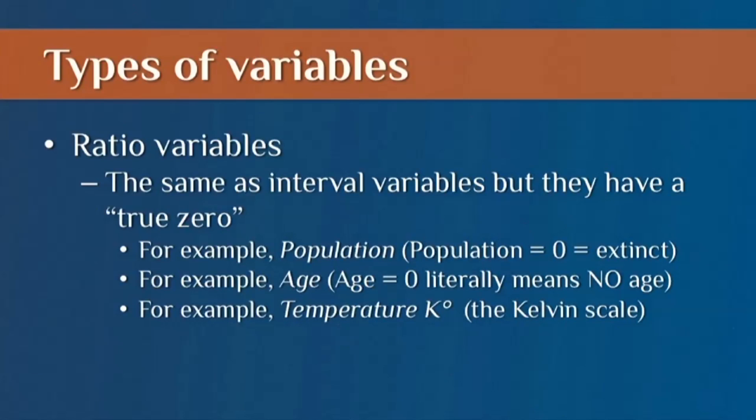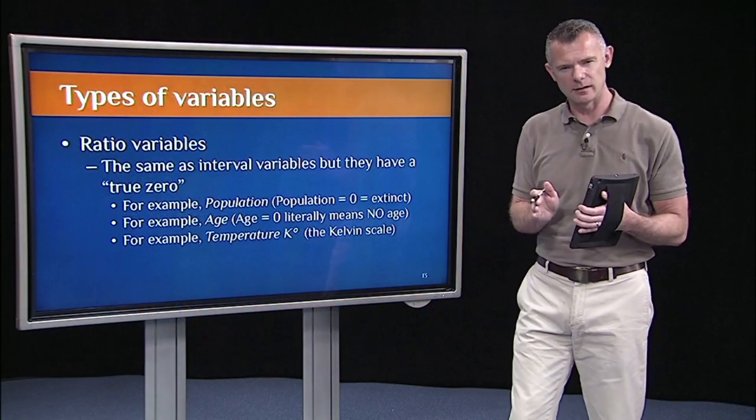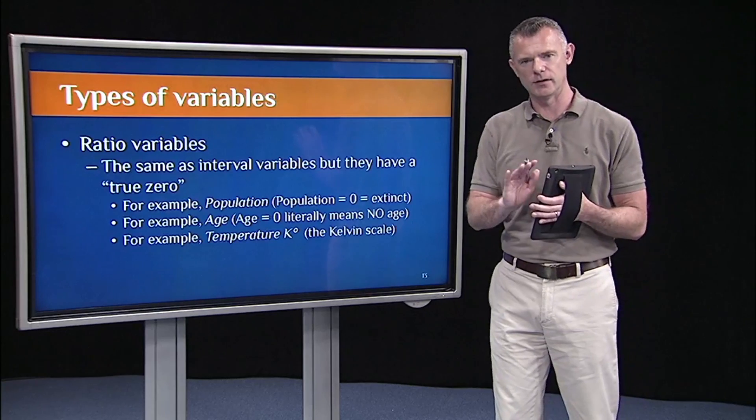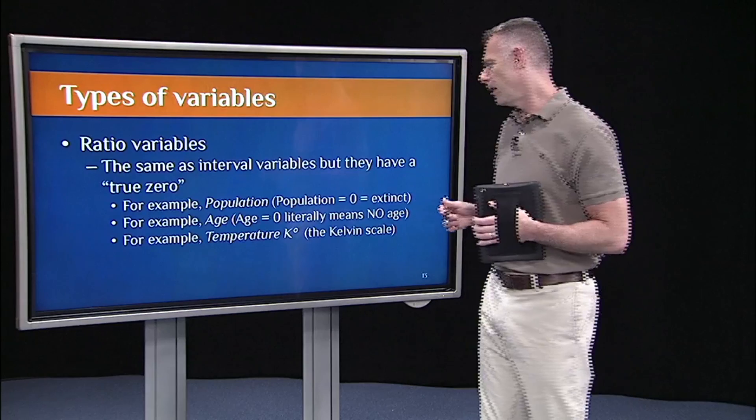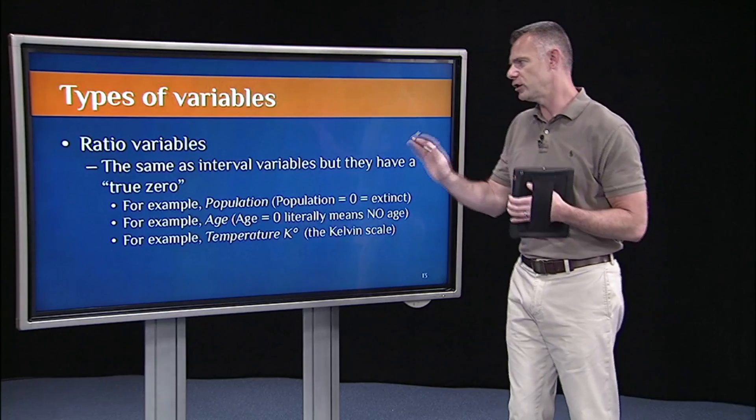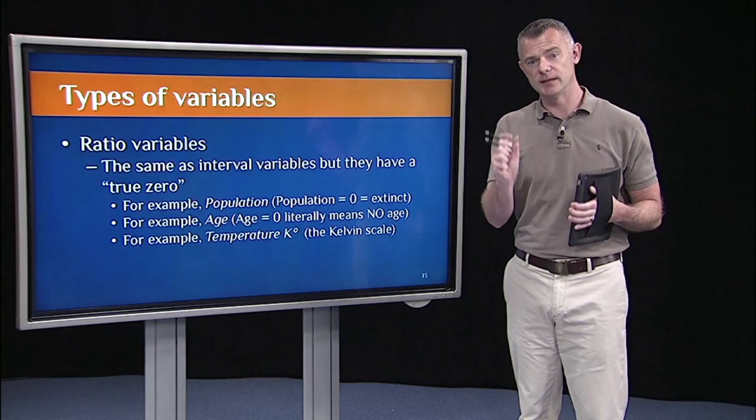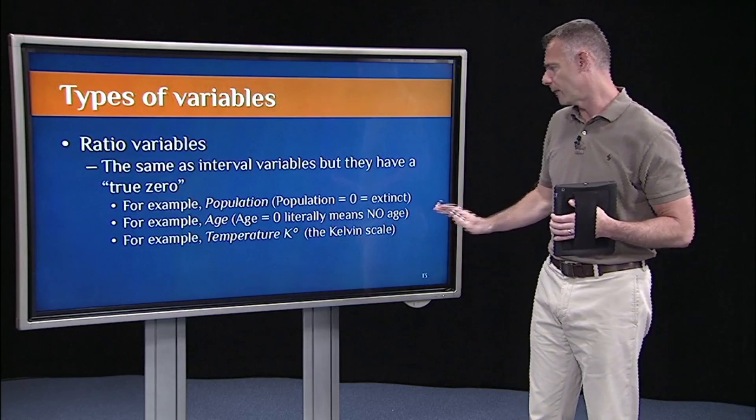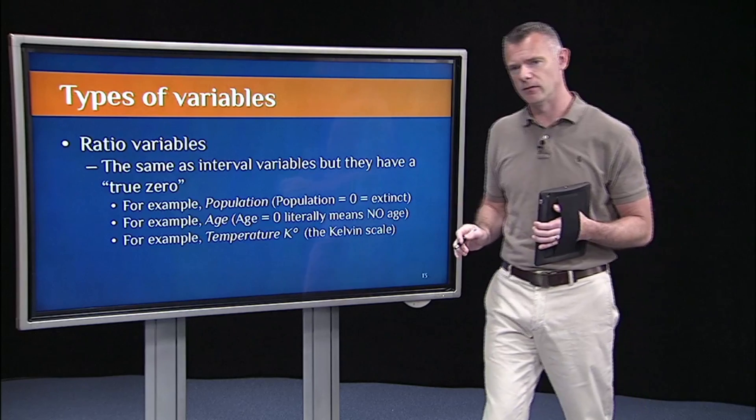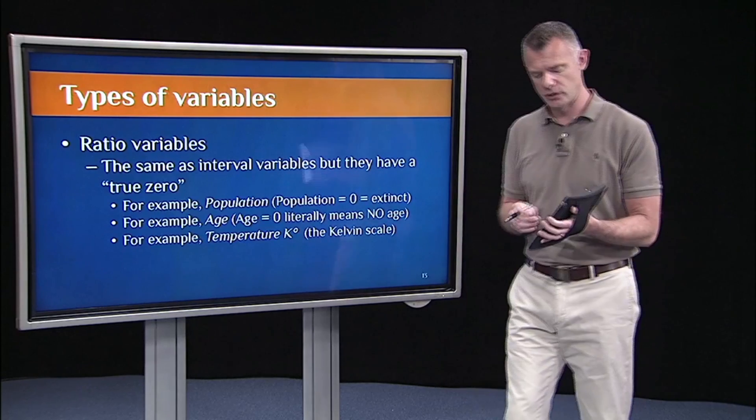Another example is age. If your age is zero, you can literally have no age. Another good example is temperature. Temperature on the Kelvin scale, we're not used to temperature on the Kelvin scale, unless you've taken a lot of chemistry courses. But temperature on the Kelvin scale is a ratio variable because zero Kelvin is absolute zero. It means no temperature, it's absolute zero. So temperature on the Kelvin scale is a good example of ratio variable.